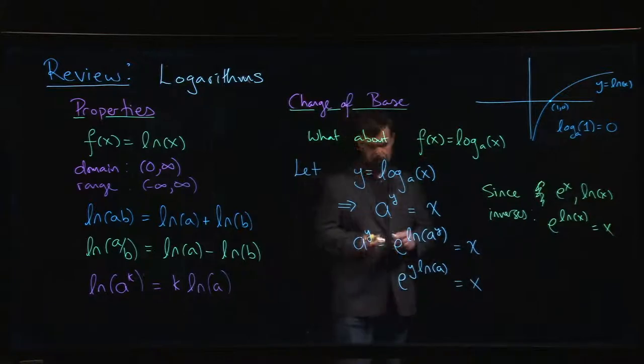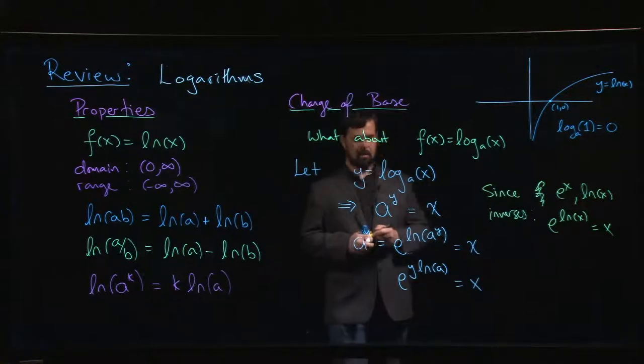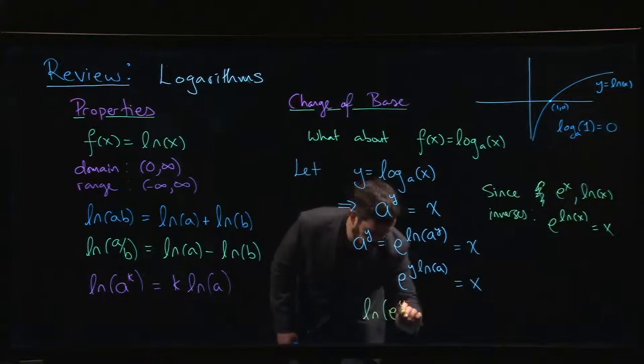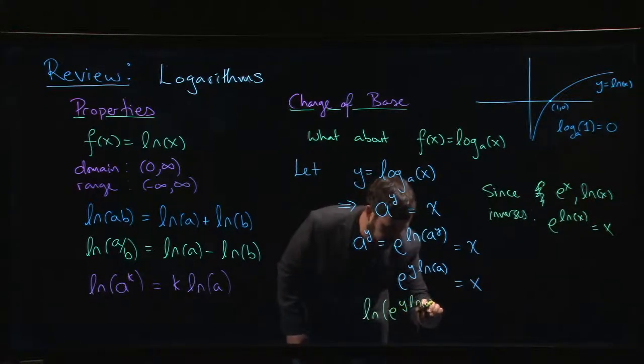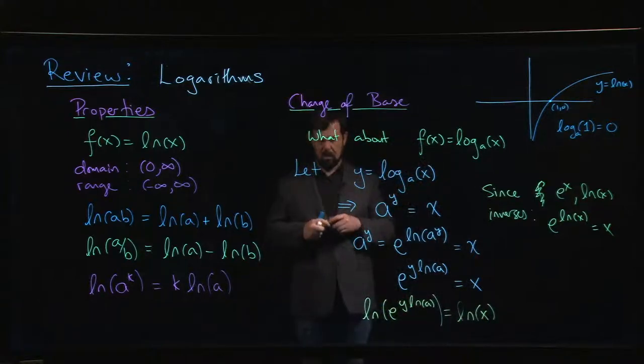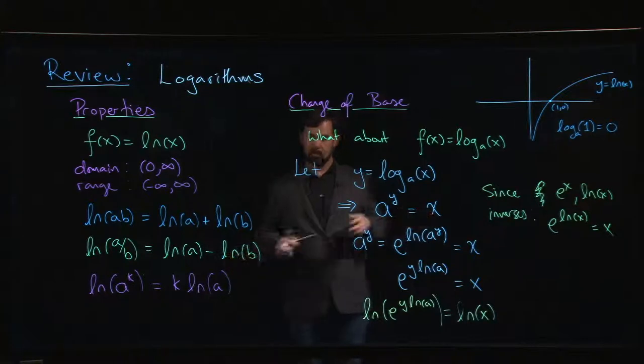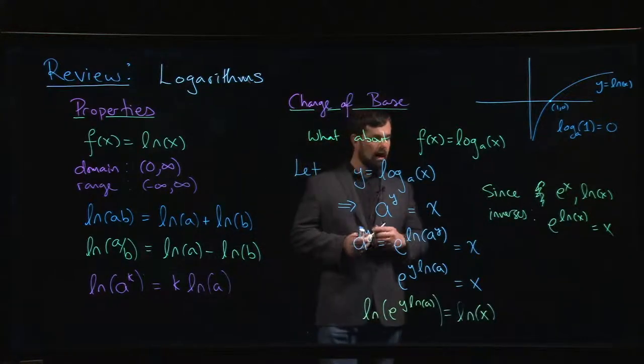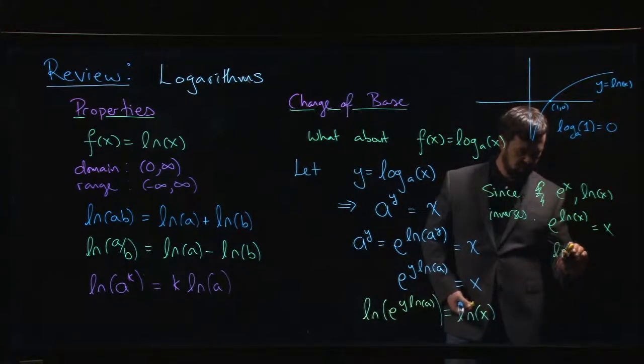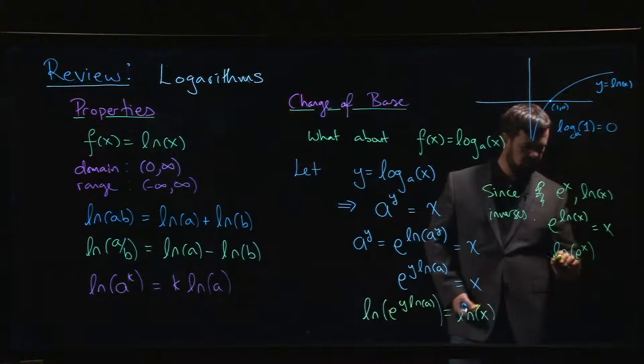Now let's take the log of both sides and see what happens. The natural log of e to the y times ln(a) is equal to the natural log of x. The function—equal inputs have to produce equal outputs. But since these are inverses, it's also true that if I do the natural log of e to some power, those cancel out and just give me back the power.